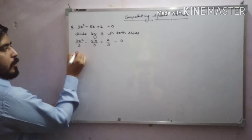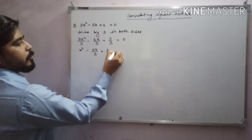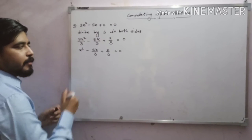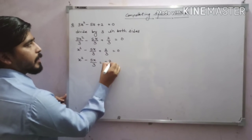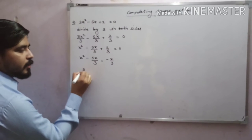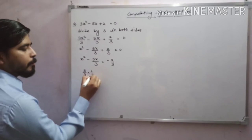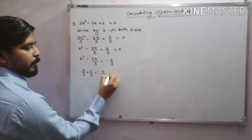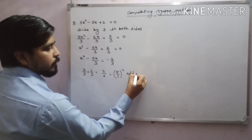Solving: x² − 5x/3 + 2/3 = 0. Second step: take the constant term to the right side: x² − 5x/3 = −2/3. Now take the coefficient of x only — 5/3 — multiply by 1/2 to get 5/6, then take it as a square: (5/6)². Add (5/6)² to both sides.